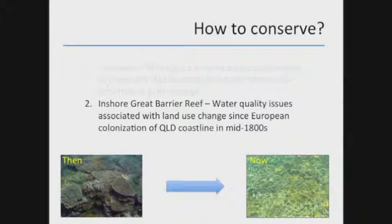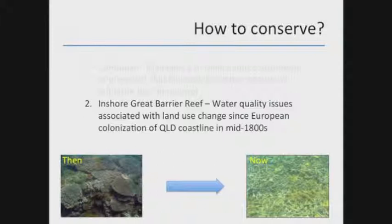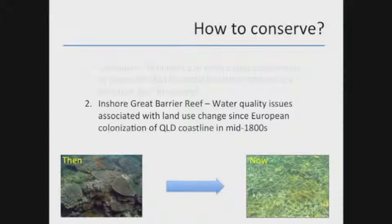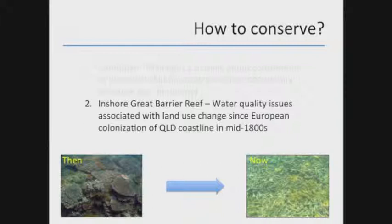For the Great Barrier Reef, the major issues are probably associated with water quality related to land use changes since European colonization. The data I presented give really good empirical weight to the need to clean up water quality on the Great Barrier Reef. Because the Acroporid branching corals aren't as able to tolerate sediment- and nutrient-rich waters, we need to clean up water quality to think about facilitating the recruitment of these corals again.